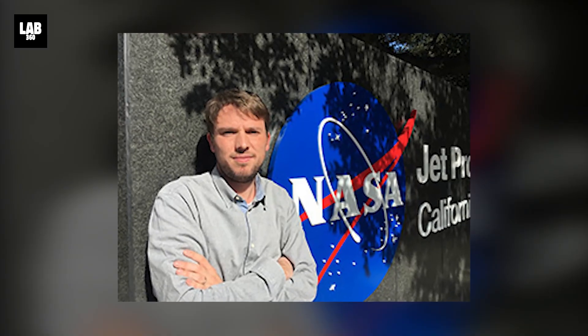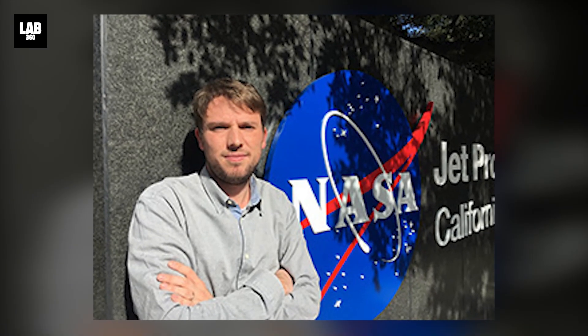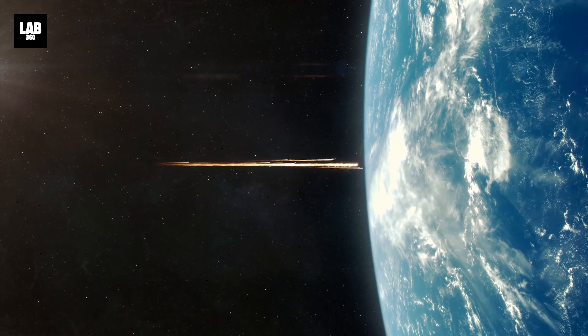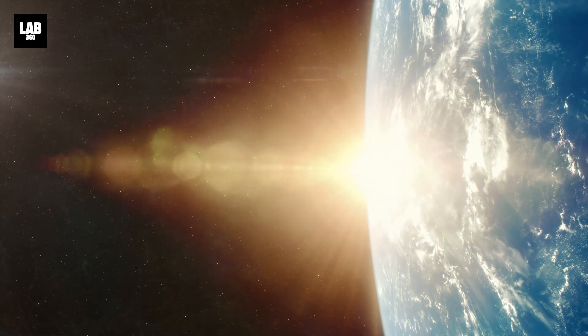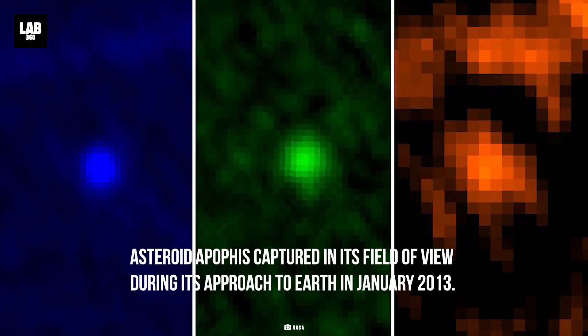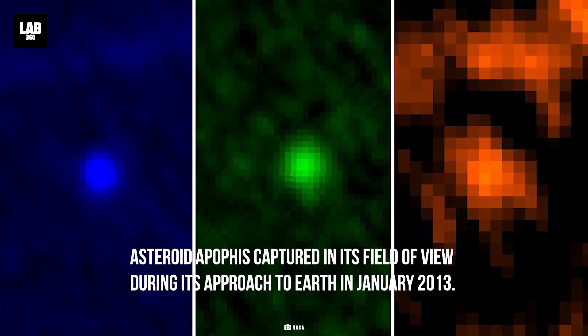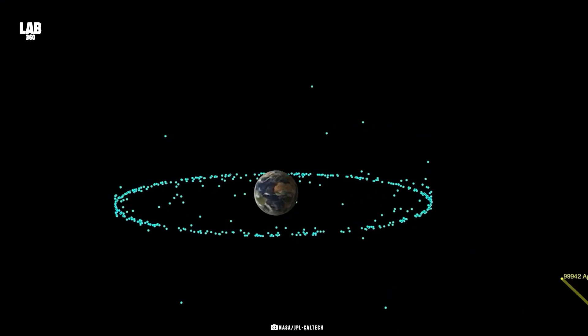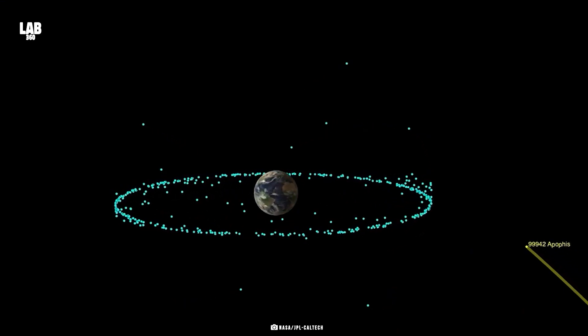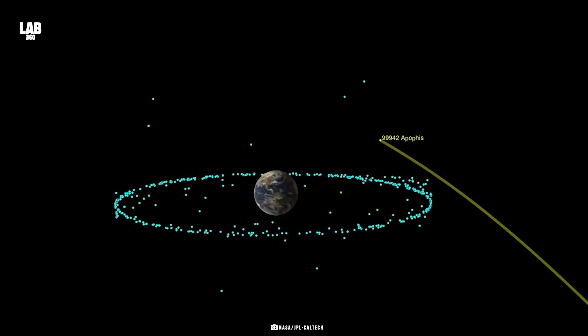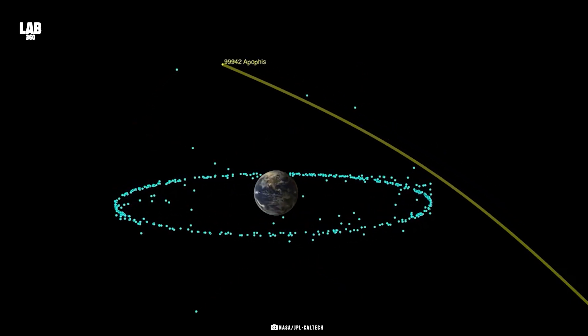According to Davide Farnocchia of NASA's Center for Near-Earth Object Studies, the 2068 impact is not in the realm of possibility anymore. Their calculation does not show any impact risk for at least the next 100 years. Apophis has been removed from the list maintained by the Center for Near-Earth Object Studies that is tracking the asteroids whose orbits take them so close to Earth that an impact can't be ruled out.